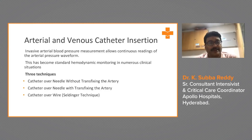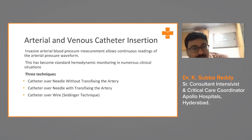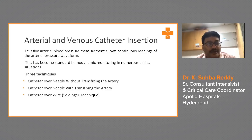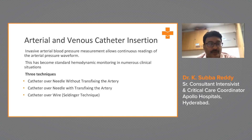Arterial and venous catheter insertion comes after airway management. Invasive arterial blood pressure measurement with continuous reading of the arterial pressure waveform has become a standard hemodynamic monitoring in numerous clinical situations. There are three techniques: catheter over the needle without transfixing the artery, catheter over the needle with transfixing the artery, and catheter over the wire — the Seldinger technique.